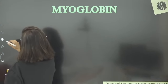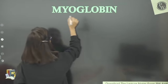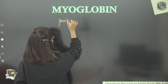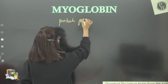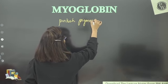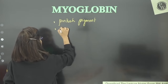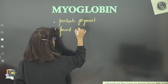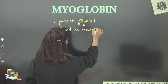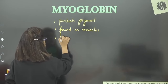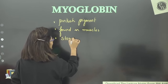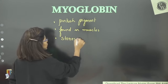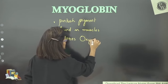So myoglobin's role: it is a pinkish colored pigment found in muscles, and it stores oxygen. Unlike hemoglobin, which transports oxygen, myoglobin stores oxygen.